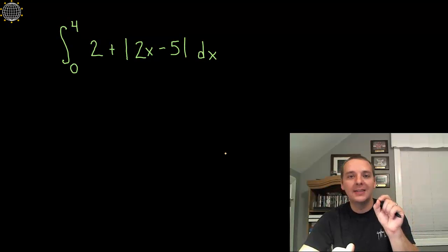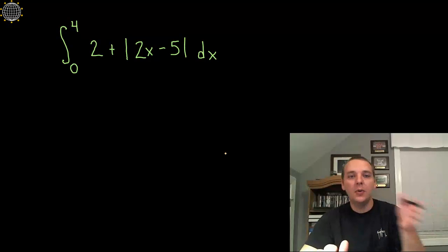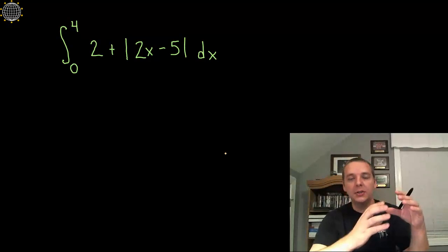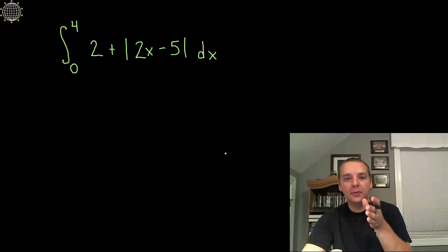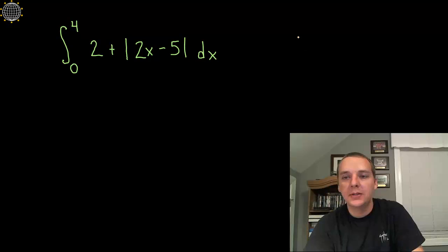If that vertex is in the middle of your interval of integration, then you would integrate from 0 up to the vertex as one region, plus integrate from that vertex up to 4 for the second region, and basically break these into two separate regions.